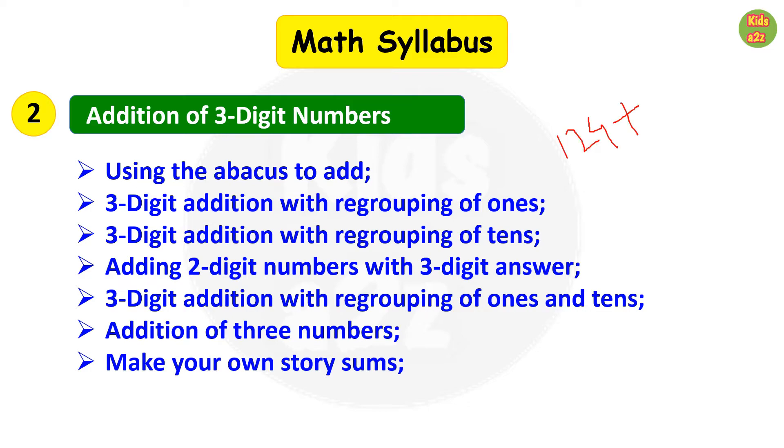Making your own story sums: suppose a condition is given, like 124 plus 166, now using this kids need to make a story sum. Estimating sums—we already did this in class 2 but with two-digit numbers. Now they will learn with three-digit numbers.